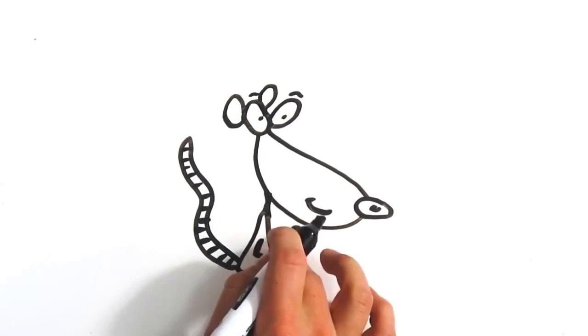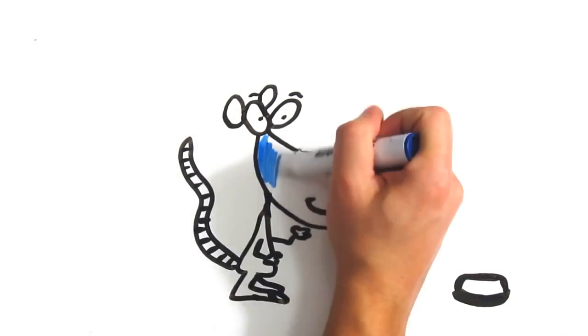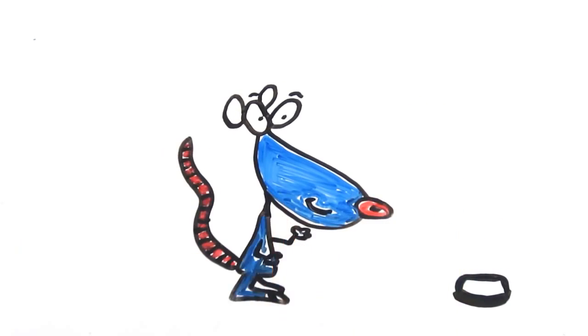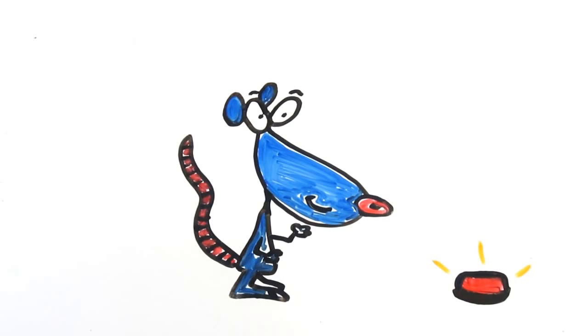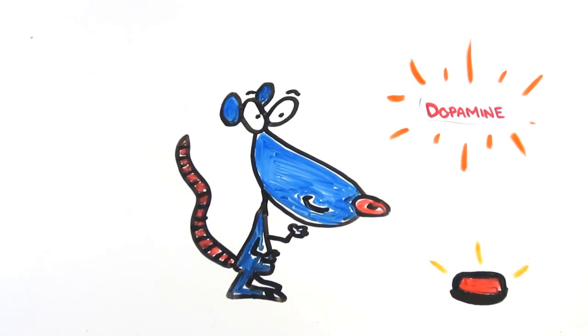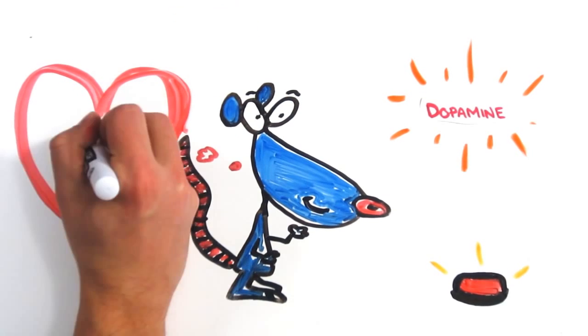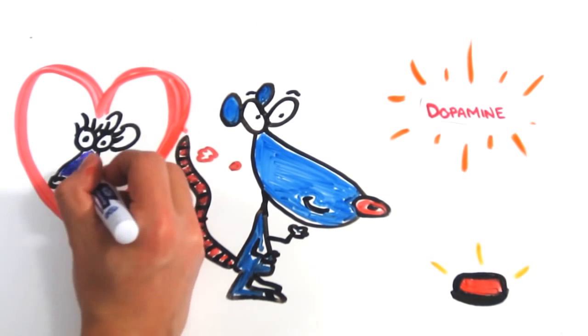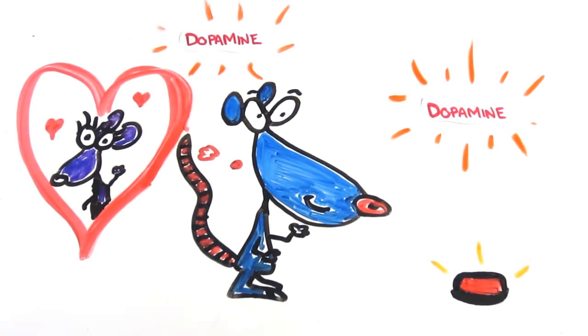The National Institutes of Health measure drug addictiveness by testing rats. The rat is trained to press a button to get a drug, and the harder it works indicates how addictive the substance is. It turns out that the more addictive a drug is, the more dopamine we see released. And while there is, unfortunately, no rat porn that we can give to them, we do know that dopamine is also released during sexual excitement, which pornography plays right into.